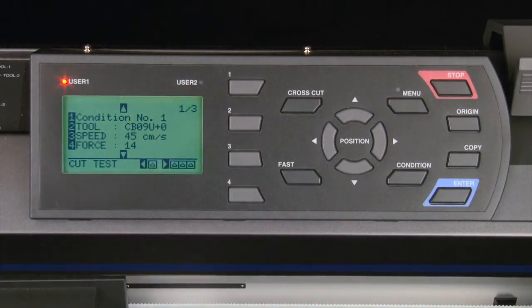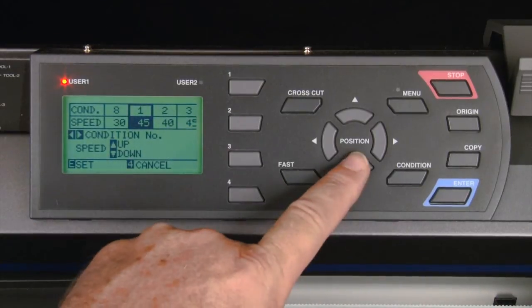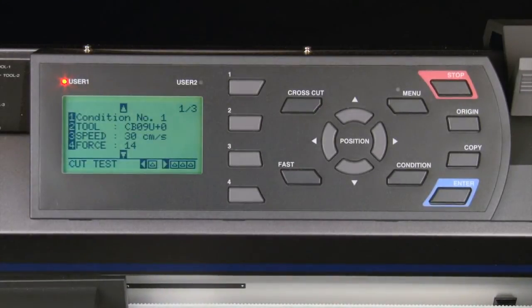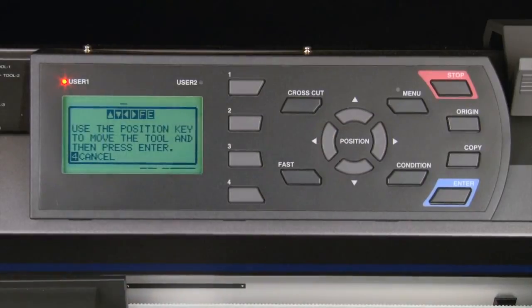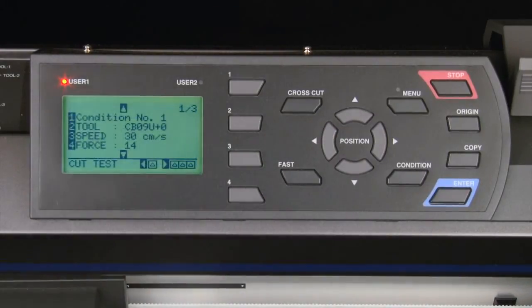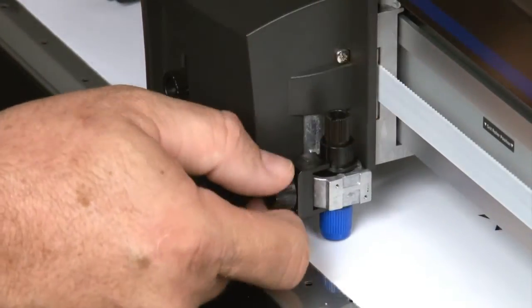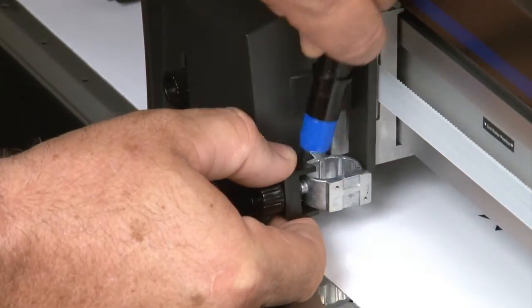Next we can set the speed to about 30. If you'd like, press the left arrow to perform a test cut to ensure the cut depth is correct, then readjust the settings if need be. Next we'll move the blade tool from the back slot to the front slot of the tool carrier, which is tool carrier position 3.